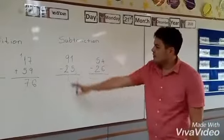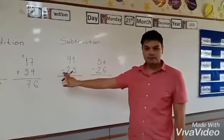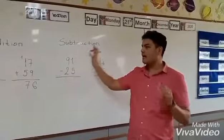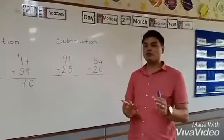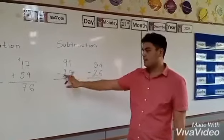Now let's have a look at subtraction. The subtraction sign is minus. Be careful. And here we are going to regroup as well. This means, for example, 91 minus 25.